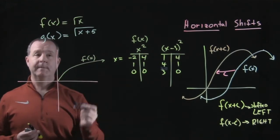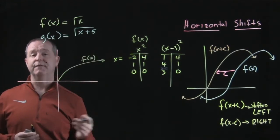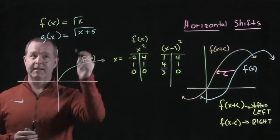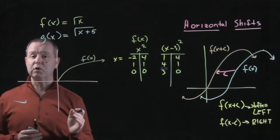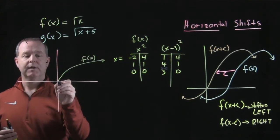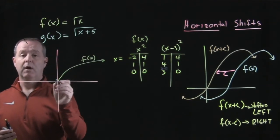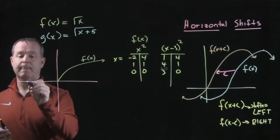Now my g of x is going to take every point and shift it which way? It's a positive constant, which means we shift it counterintuitively to the left. So rather than the point (0, 0), we're going to have the point (-5, 0).